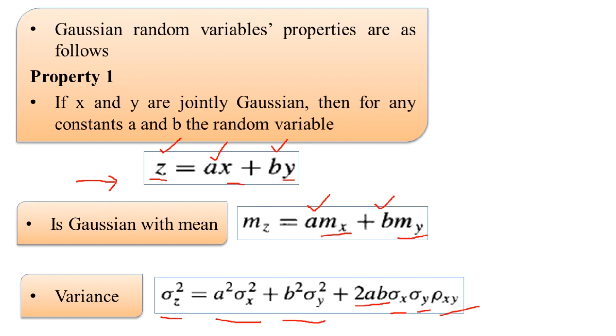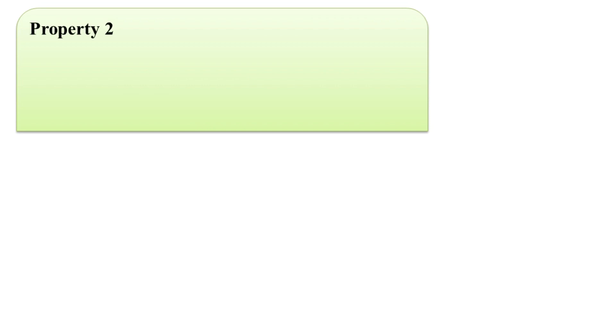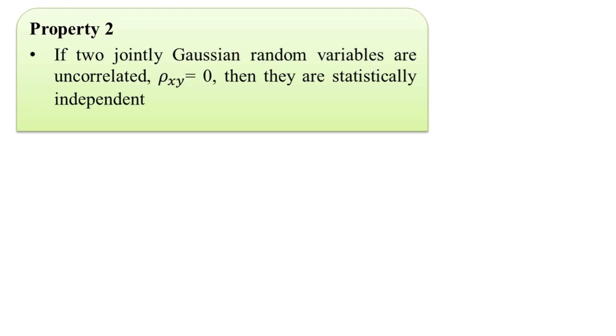Now for property number two, we again take the joint case of Gaussian random variables. When these are uncorrelated, the uncorrelatedness can be expressed when the correlation coefficient is equal to zero. In that particular case, we have statistical independence of the two joint Gaussian random variables X and Y.